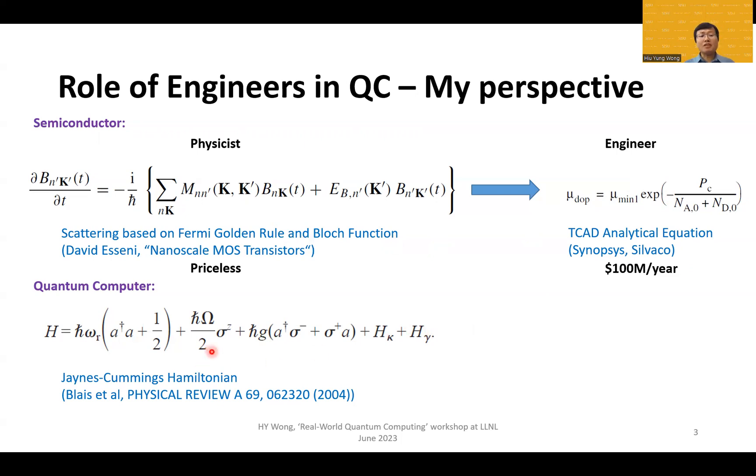Now the quantum computer has a similar situation from my point of view. The physicists came up with this second quantization, very complicated Hamiltonian, difficult to understand. I hope that the engineers, together with the physicists, can come up with some analytical equations which is more practical.